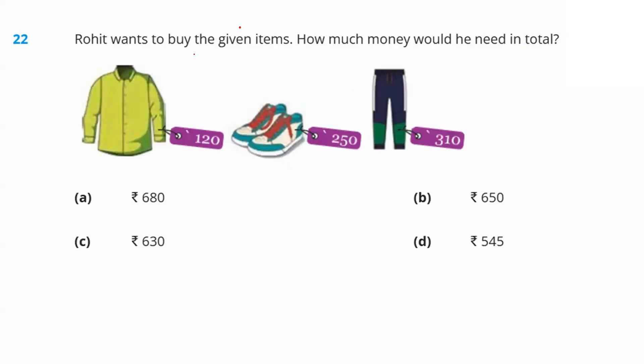Next question. Rohit wants to buy the given items. How much money will he need all in total? We just need to add the prices of all the items. 120 plus 250. That's 370 plus 310. That's 680. Option A is our answer.